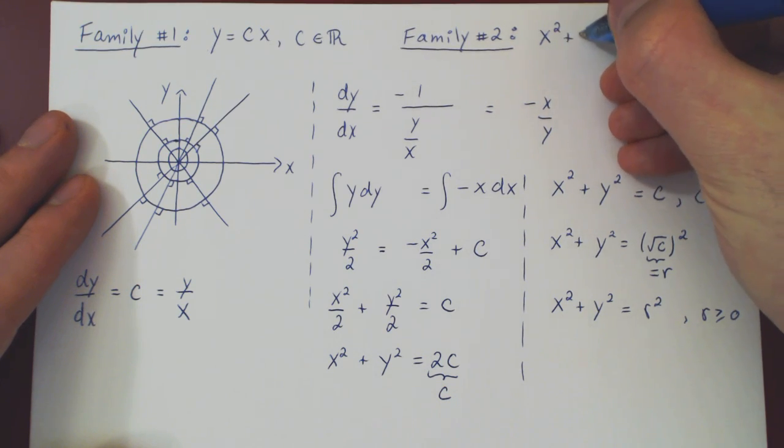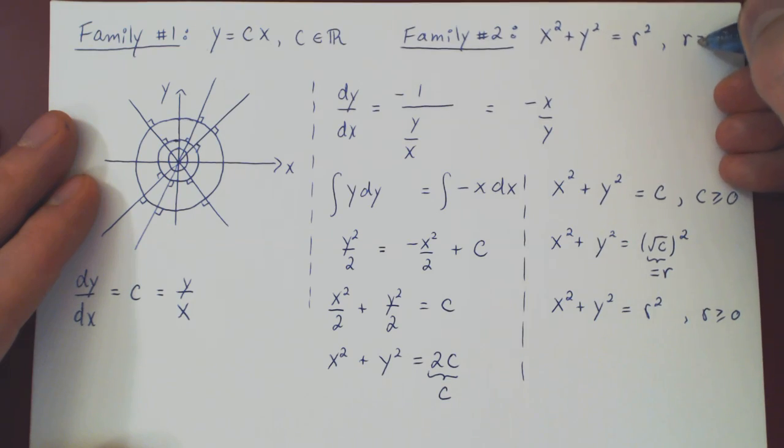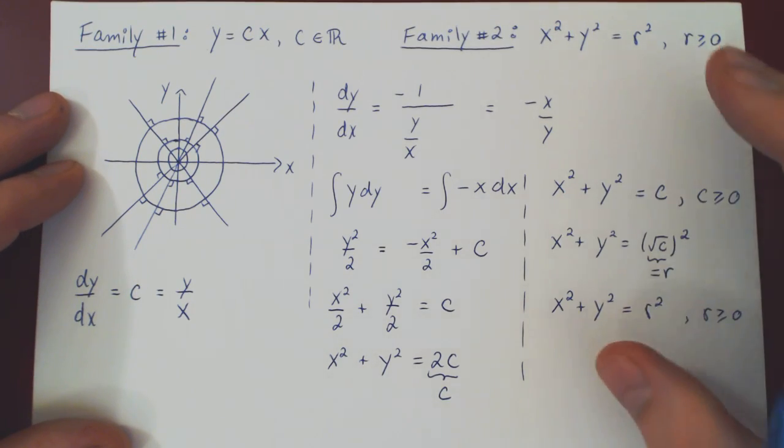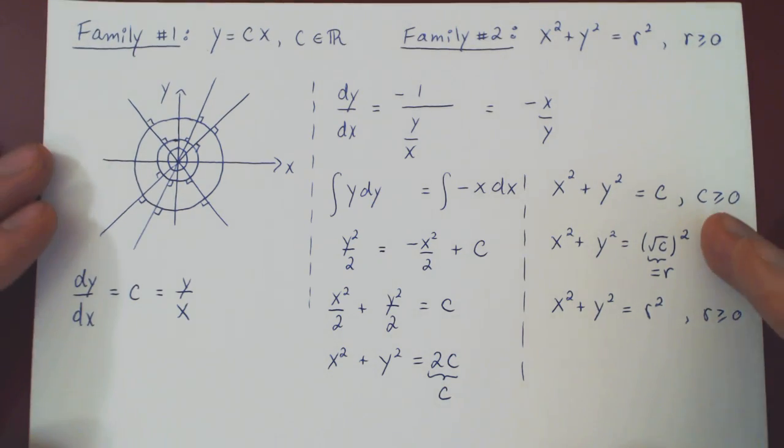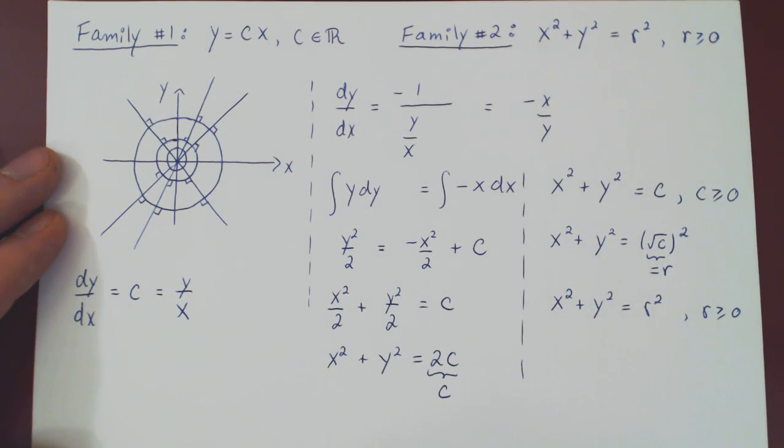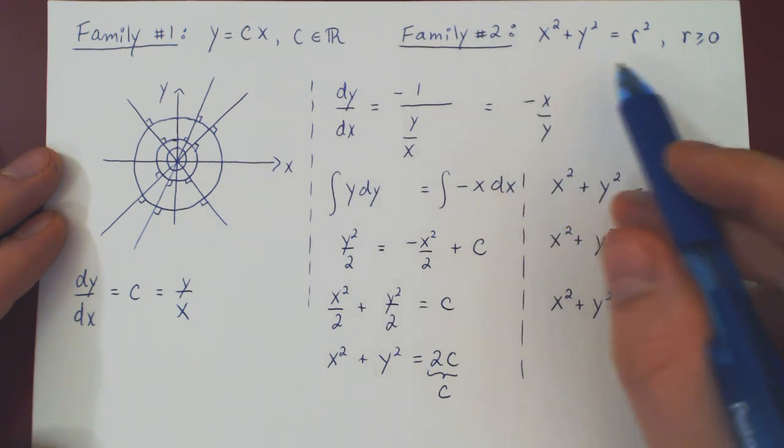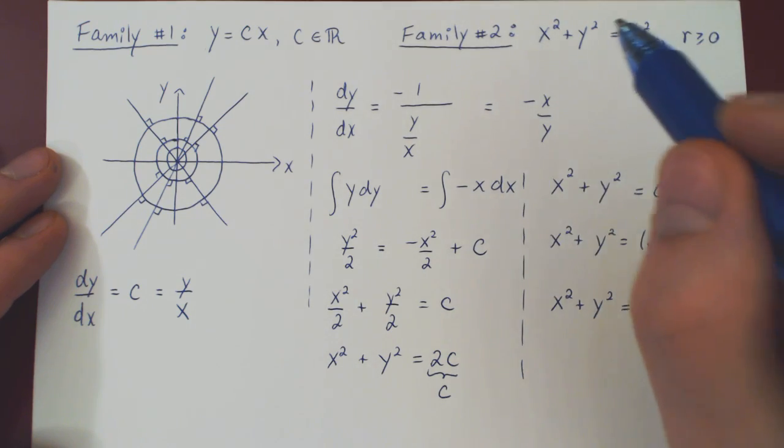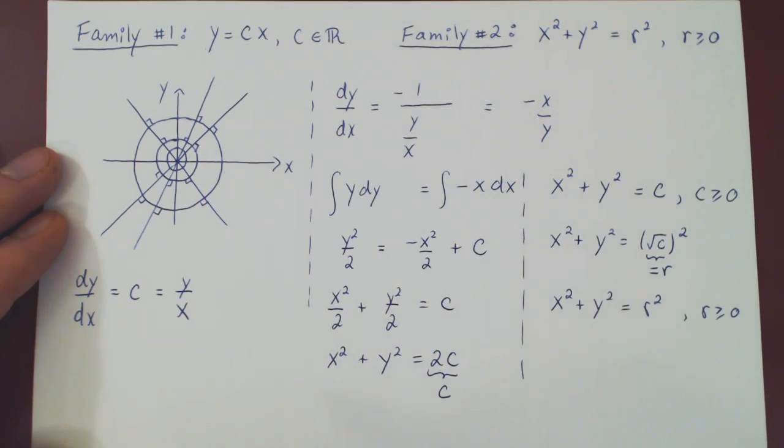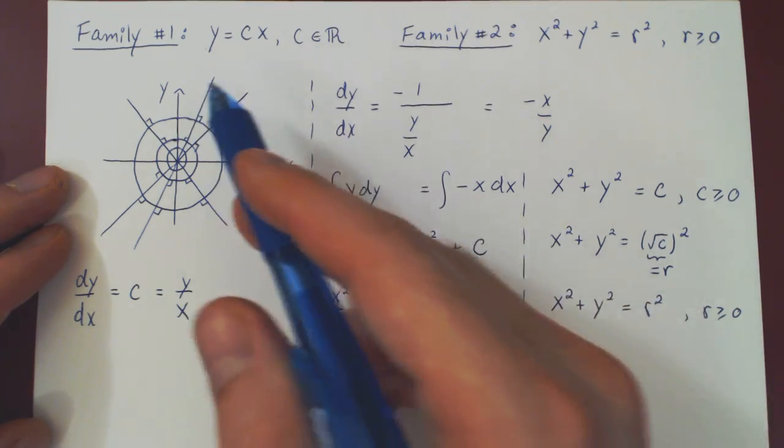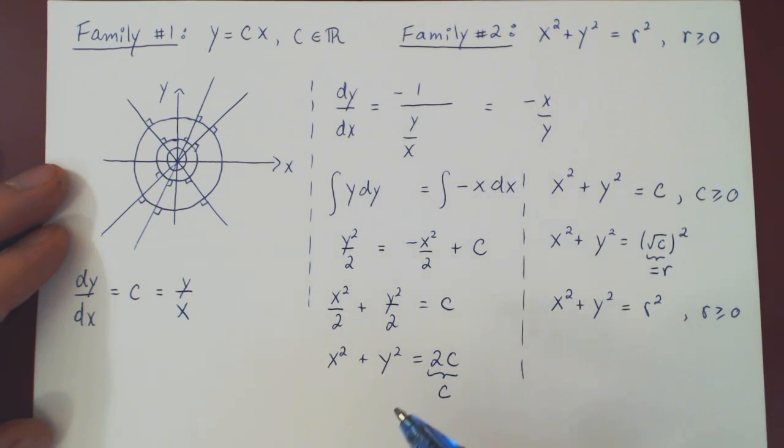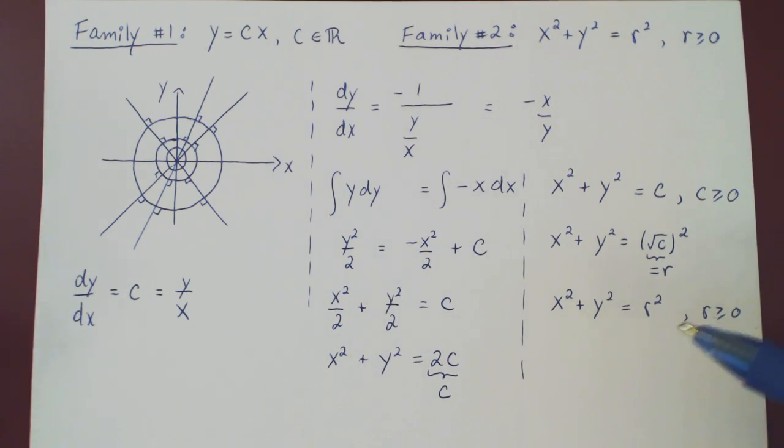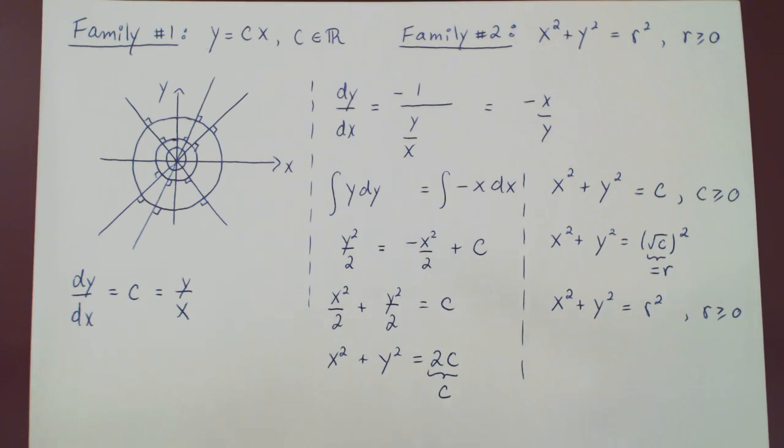So, x squared plus y squared equals r squared, where r is the radius, therefore non-negative. So, there you go. Beautiful application of differential equations. Given an infinite family of curves, we can find another infinite family of curves, where every curve from the first family intersects every curve from the other family in a perpendicular fashion. And, other than this being a really nice geometric application of differential equations, this also has applications in physics. For example, if you considered, say, electric fields in two dimensions, then this would actually apply.